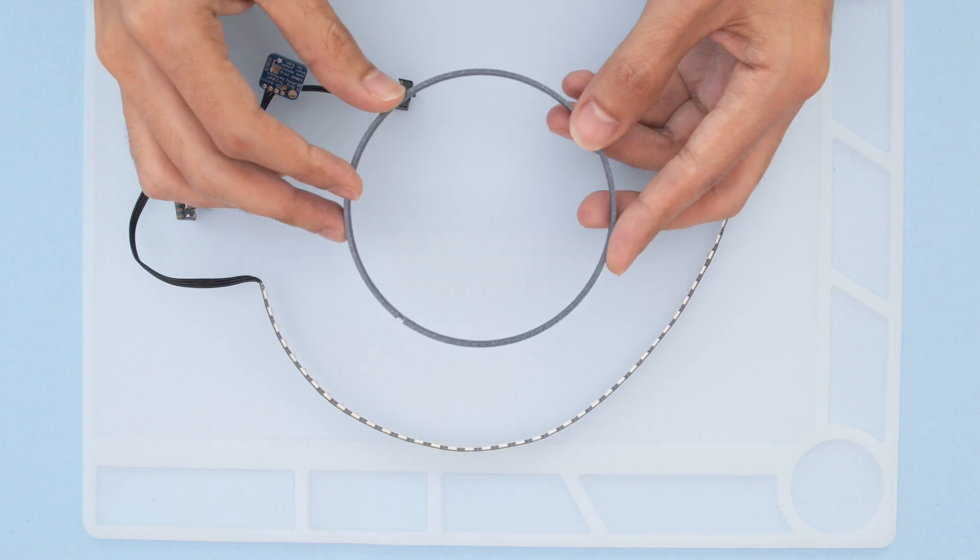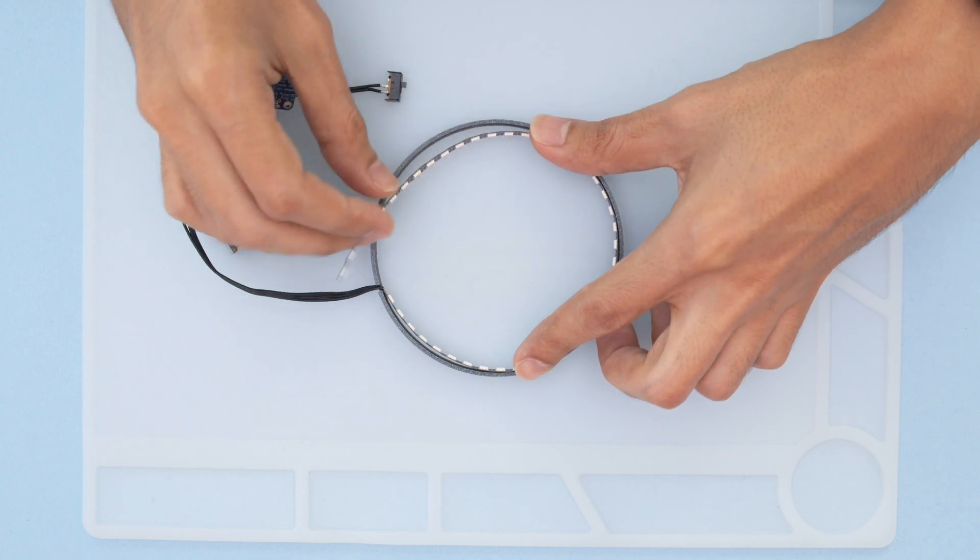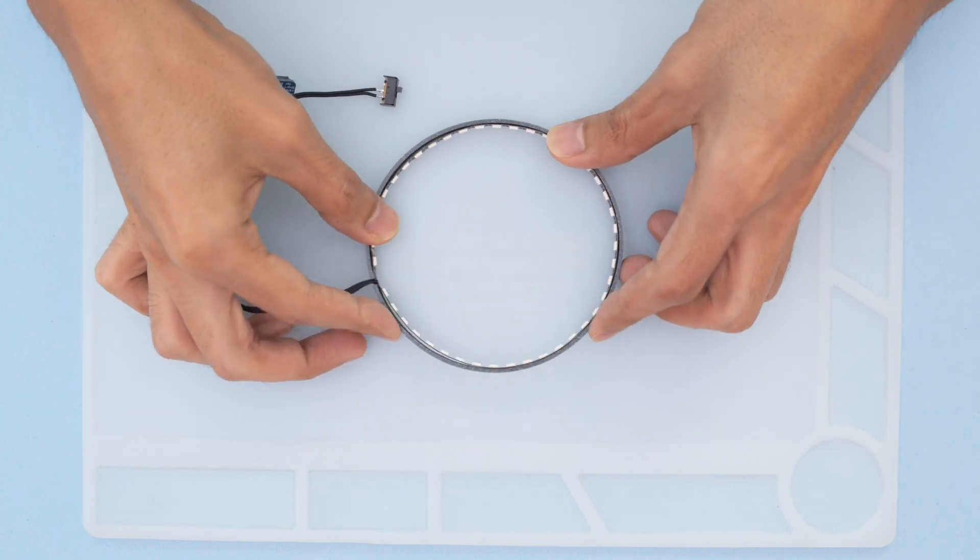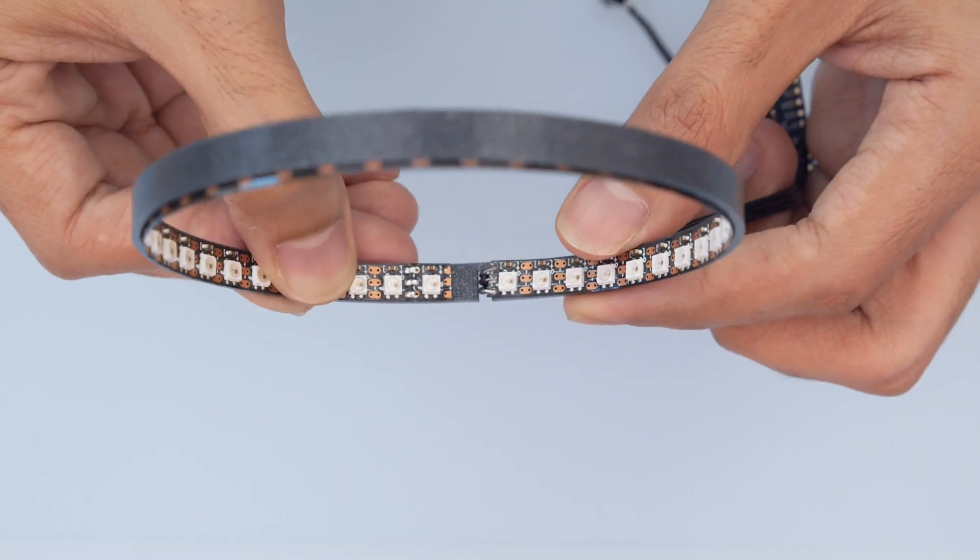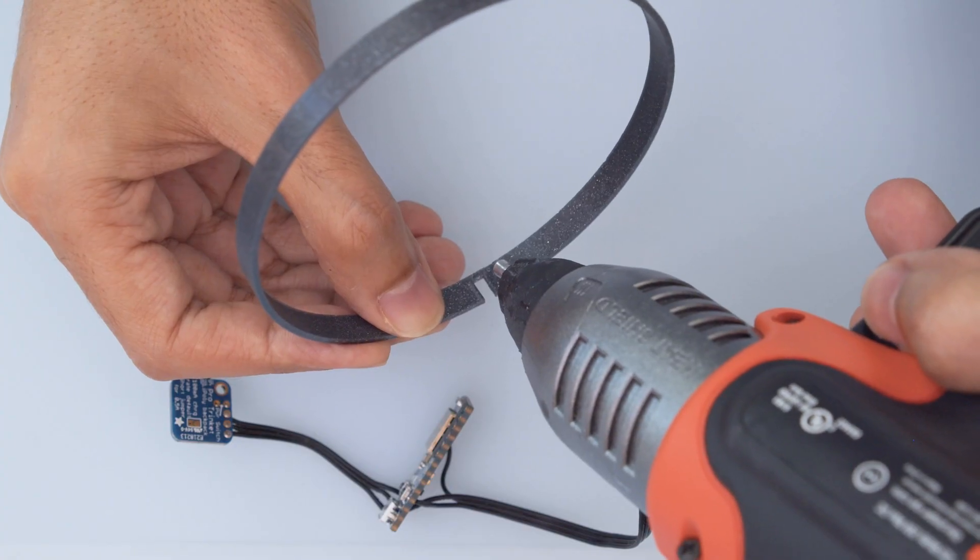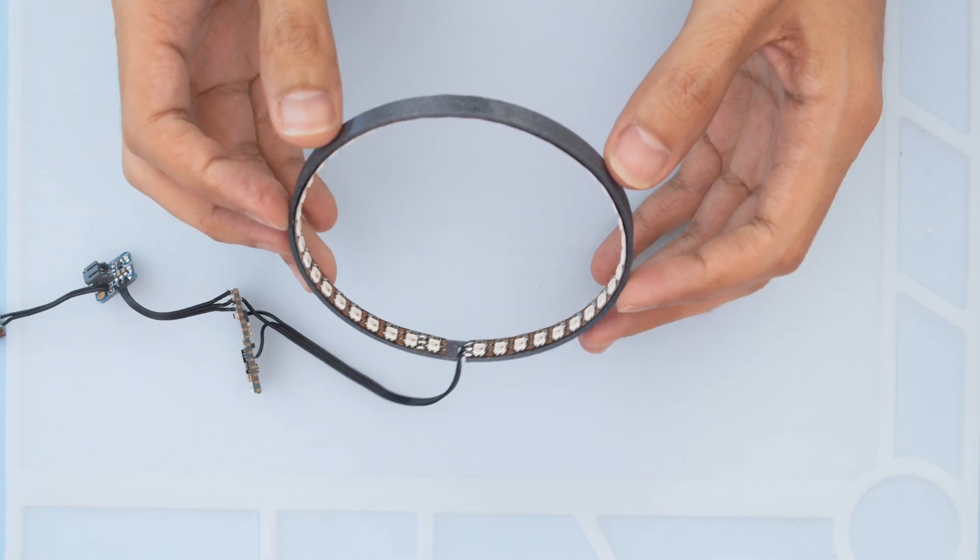This 3D printed ring will help the NeoPixel strip stay in place. The strip is fitted inside and wraps around with the NeoPixels facing inwards. The wiring is fitted through a slit so it doesn't get kinked while installing the acrylic. I used dabs of hot glue to attach the strips of NeoPixels. This keeps the strip nicely secured so it stays in place.